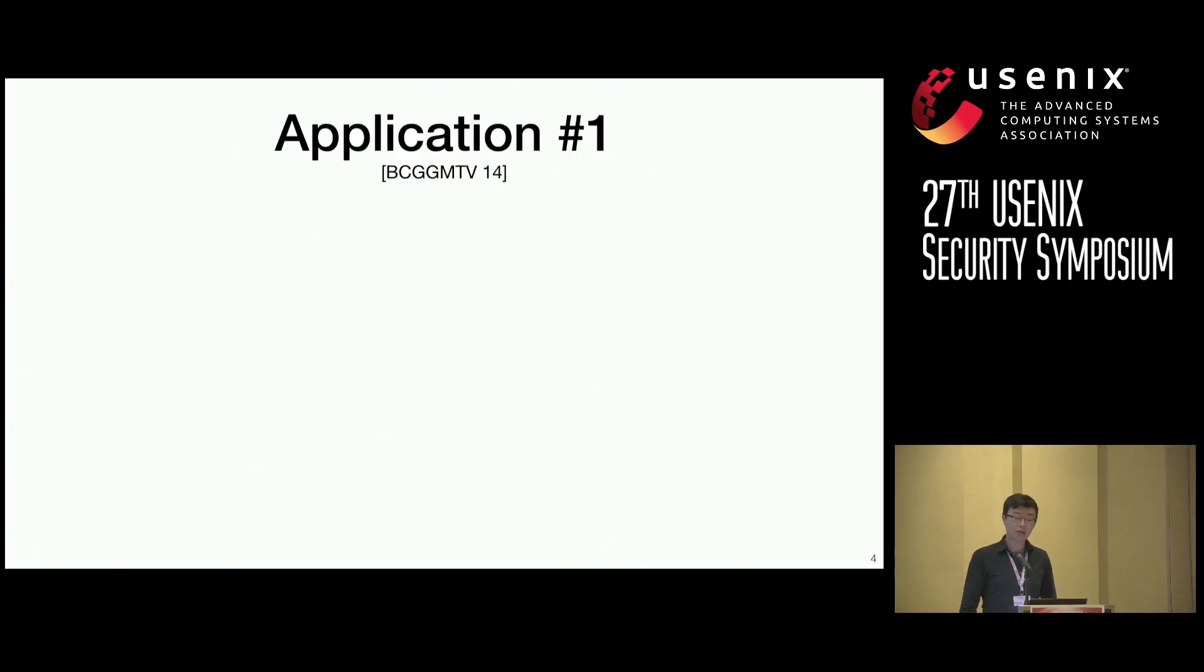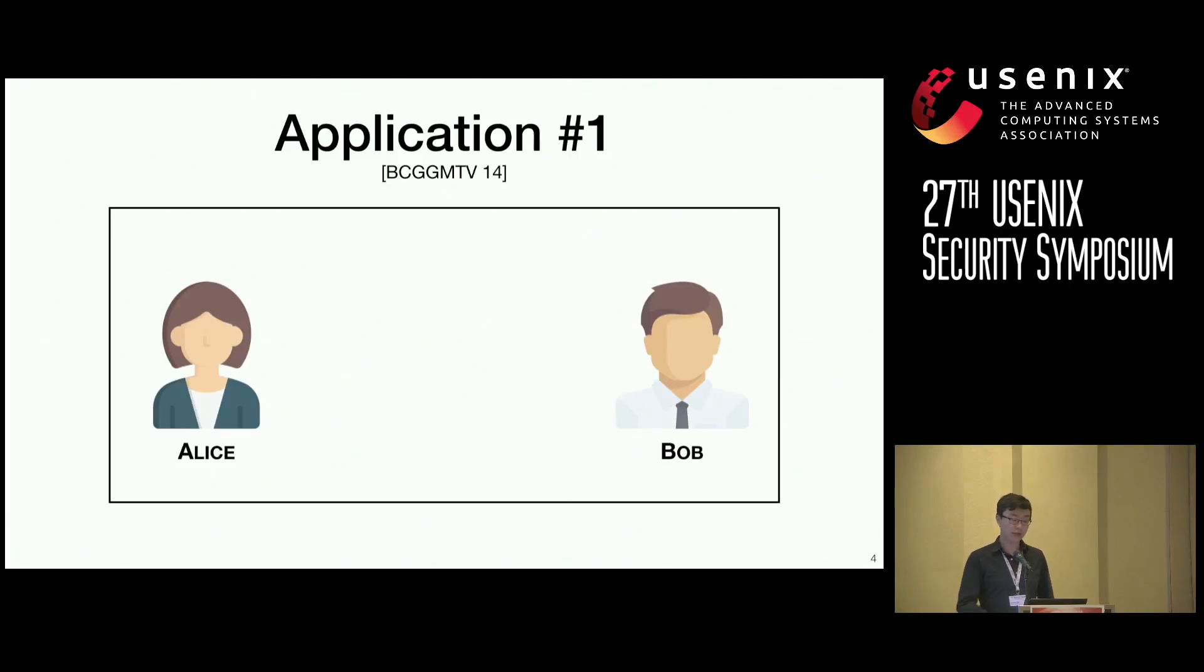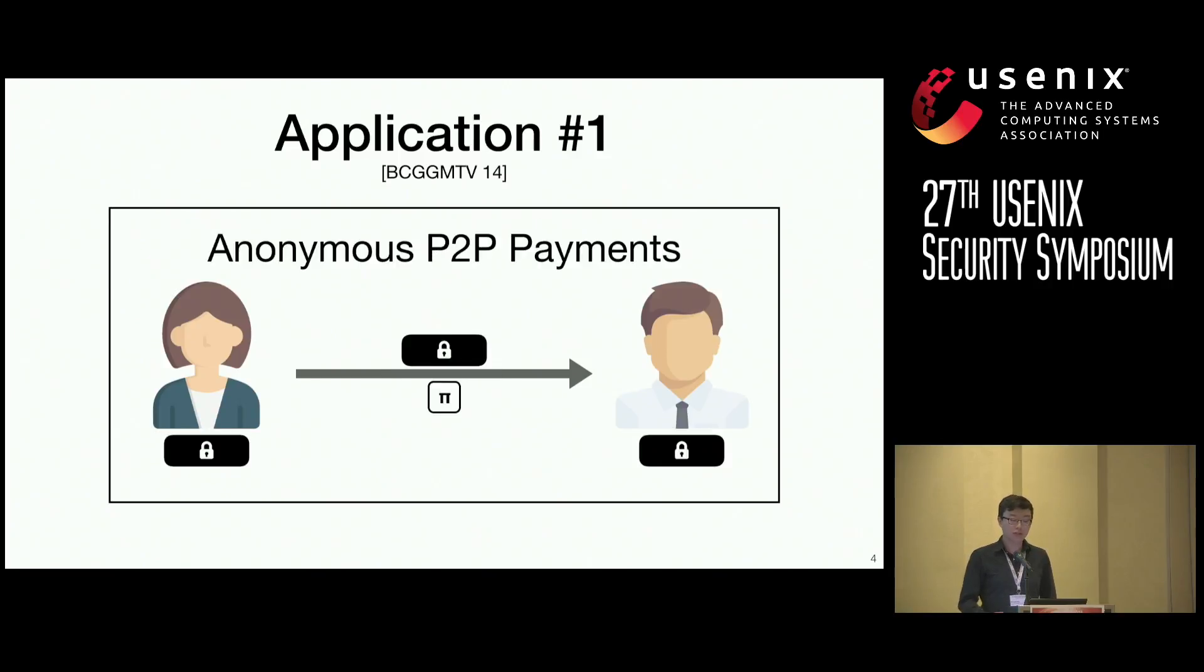So the first application that we're going to look at is peer-to-peer payments. Suppose Alice wants to pay Bob $1. She may use something like a blockchain to facilitate this payment, but this would certainly reveal that she's the sender, that Bob's the receiver, and that the payment amount is for $1. Instead, Alice could encrypt the contents of the payment, attaching a ZK-SNARK proof attesting to the validity of this payment. This is actually a protocol called ZeroCash, which is manifested in industry as Zcash.